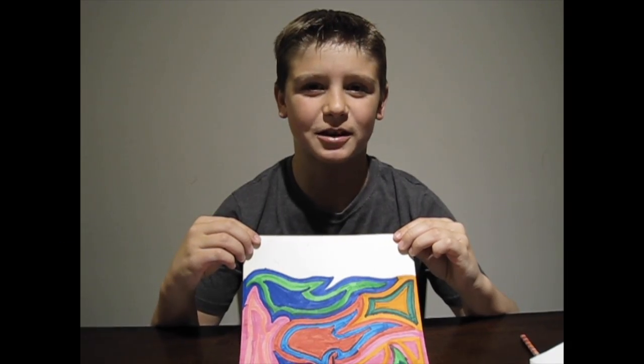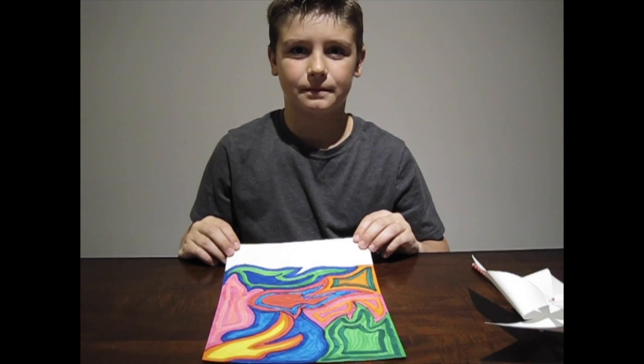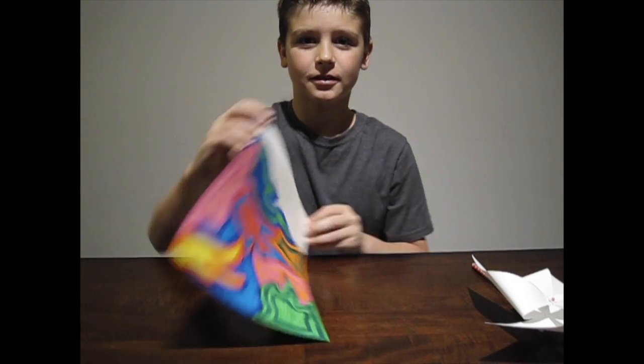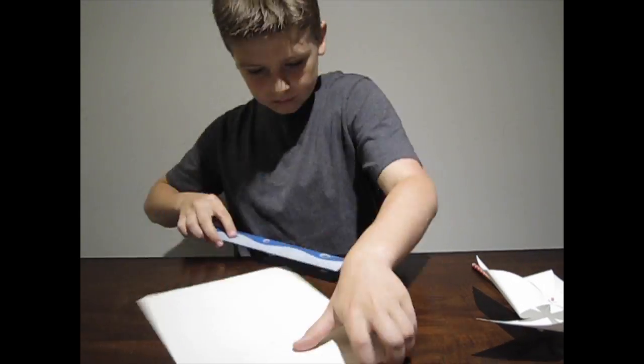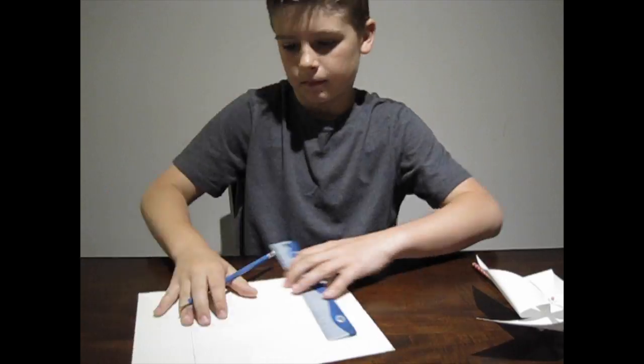You're going to need a square piece of paper, so I didn't color my whole page. In order to make your paper square, you're going to need to measure the width of your paper and make your length the same size. My square is 8 inches by 8 inches.